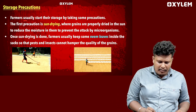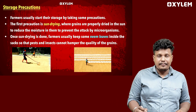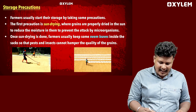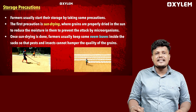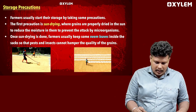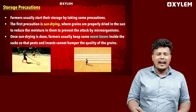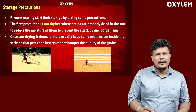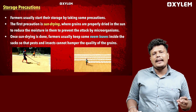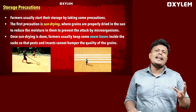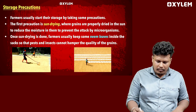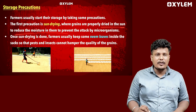Initially, farmers should store these grains properly. We will talk about how the grains are properly dried in the sun. If it is dried in the sun, we will talk about the moisture content. Dry in the sun to reduce moisture.